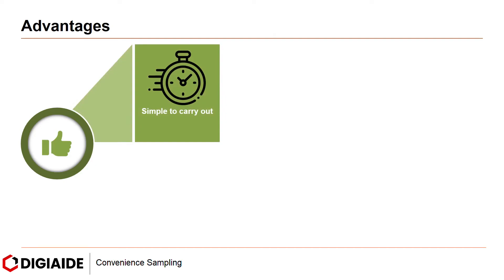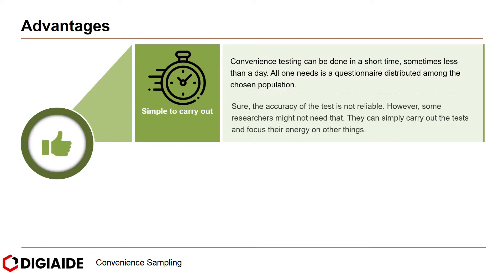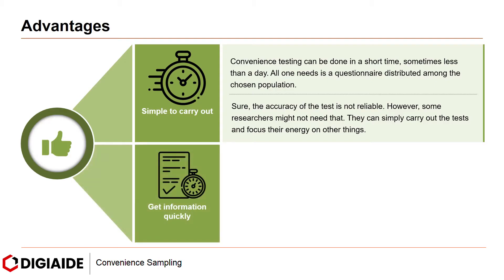Next: simple to carry out. Convenience testing can be done in a short time, sometimes less than a day. All one needs is a questionnaire distributed among the chosen population. Sure, the accuracy of the test is not reliable. However, some researchers might not need that. They can simply carry out the test and focus their energy on other things.